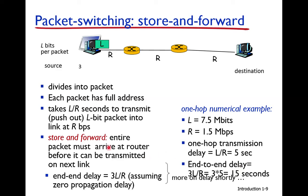Store-and-forward means the entire packet must arrive at a router before it can be transmitted onward. Some bits of the packet arrive and are stored until the whole packet has arrived. When the whole packet is received, the router checks the source and destination address and then forwards the packet.